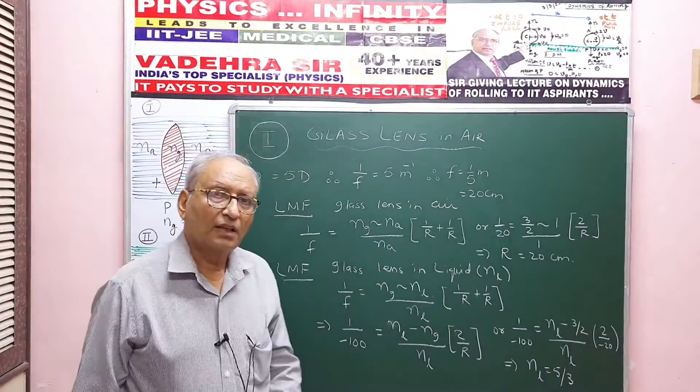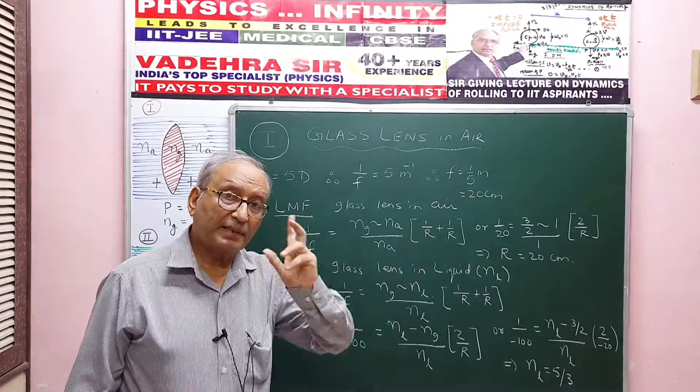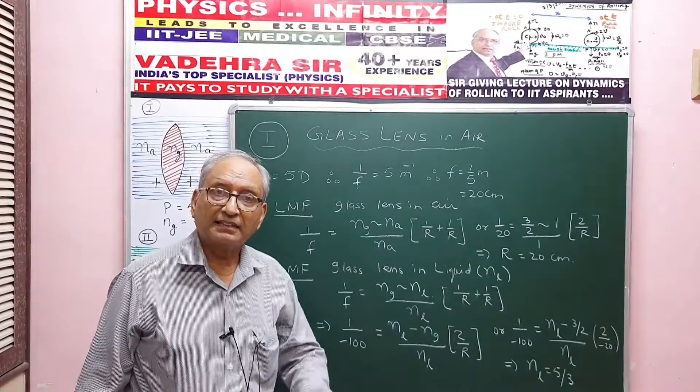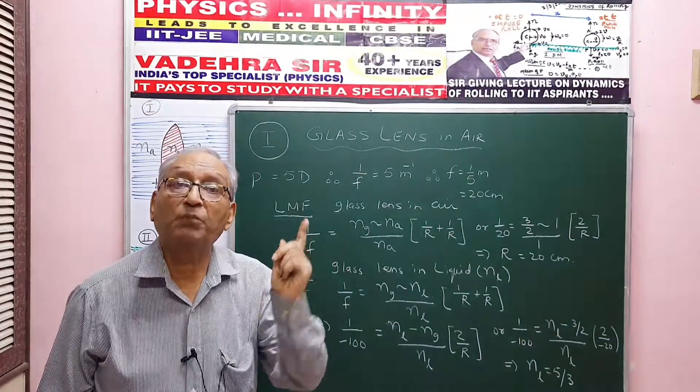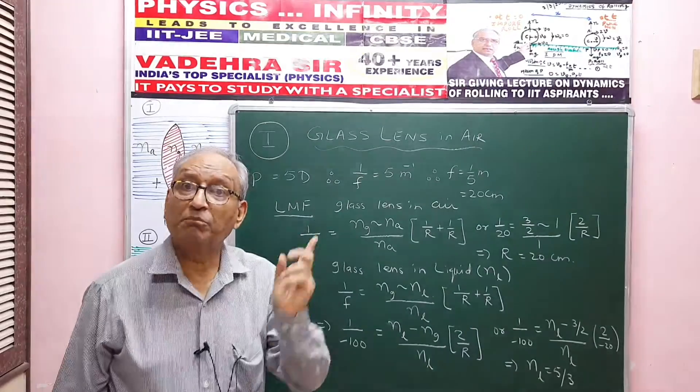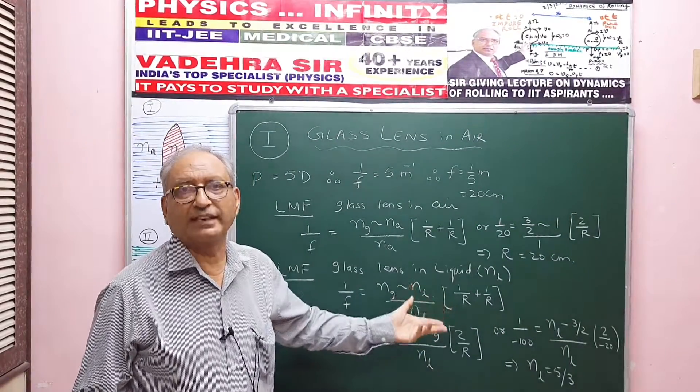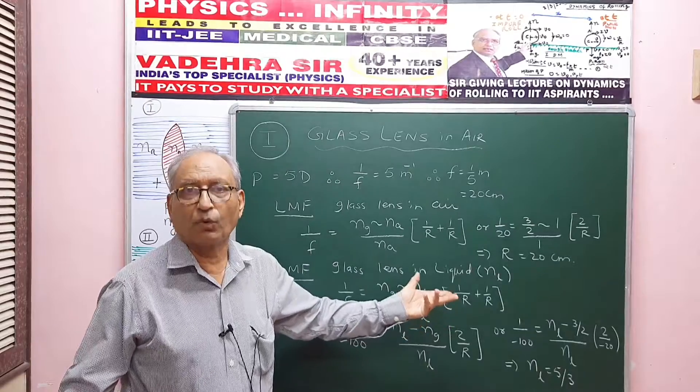But mark you one thing here: because it has now become a diverging lens, both surfaces have become concave in the liquid. That means NL should be more than NG. So when I take the difference, ultimately when I work it out numerically, I'll have to take what is higher, what is lower.